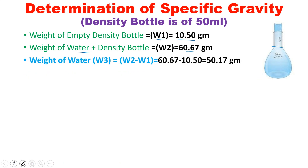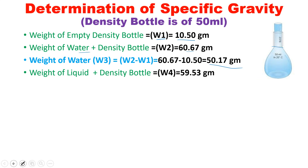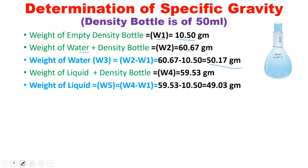To get the weight of water, W3 = W2 minus W1, which gives 50.17 grams. Next, fill the bottle with the test liquid and weigh it — that is W4, the weight of liquid plus the density bottle. To get the weight of liquid alone, subtract the bottle weight W1 from W4. The weight of liquid is 49.03 grams.